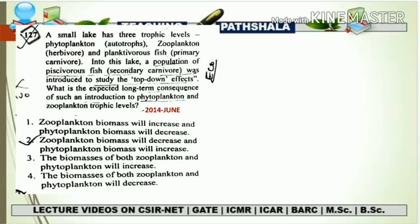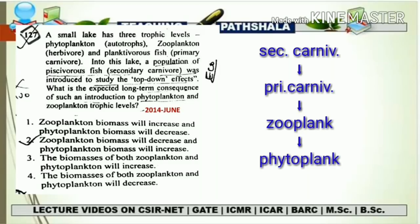The first question is from June 2014. A small lake has three trophic levels: phytoplankton (autotroph), zooplankton (herbivore), and planktivorous fish (primary carnivore). A population of piscivorous fish (secondary carnivore) was introduced into this lake to study the top-down effect. What is the expected long-term consequence of this introduction on the phytoplankton and zooplankton trophic levels? We convert the given condition into a flowchart: a secondary carnivore is introduced alongside the existing primary carnivore, zooplankton, and phytoplankton.